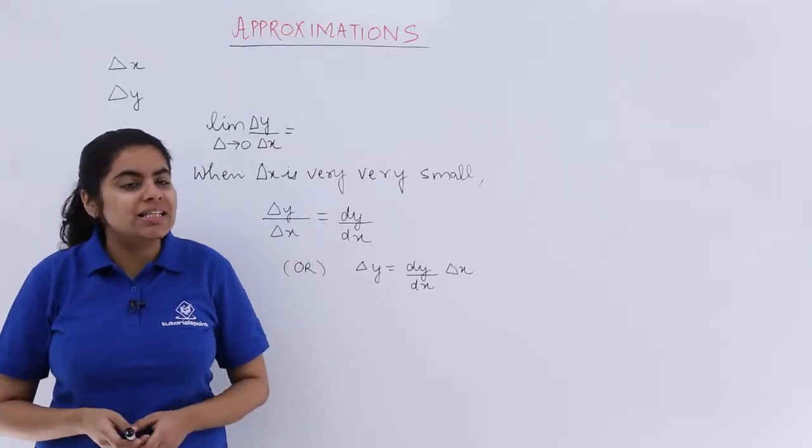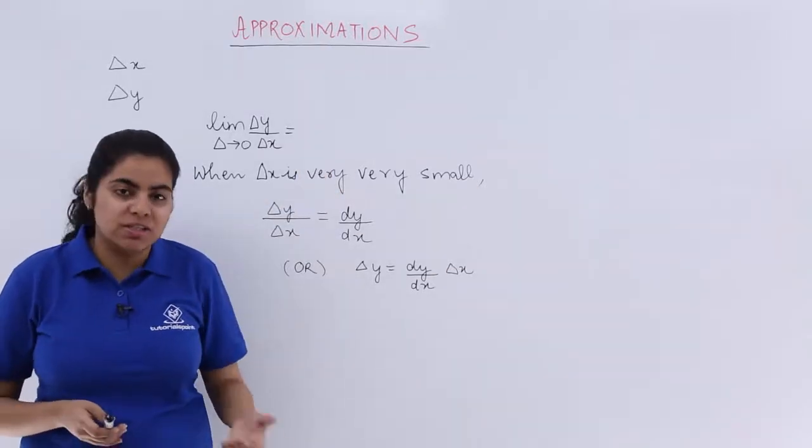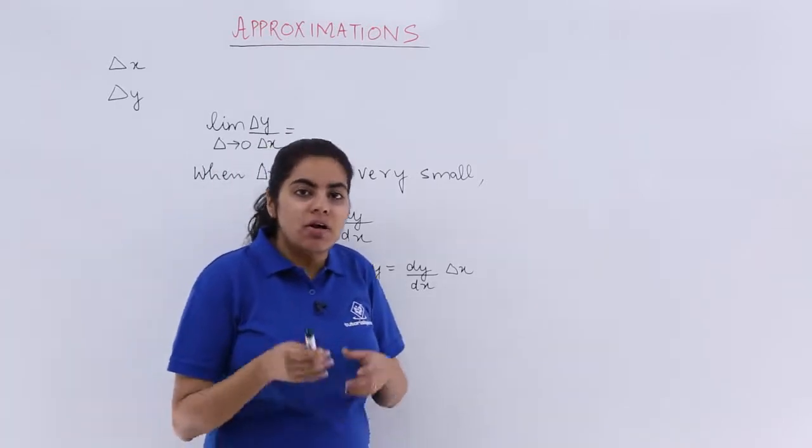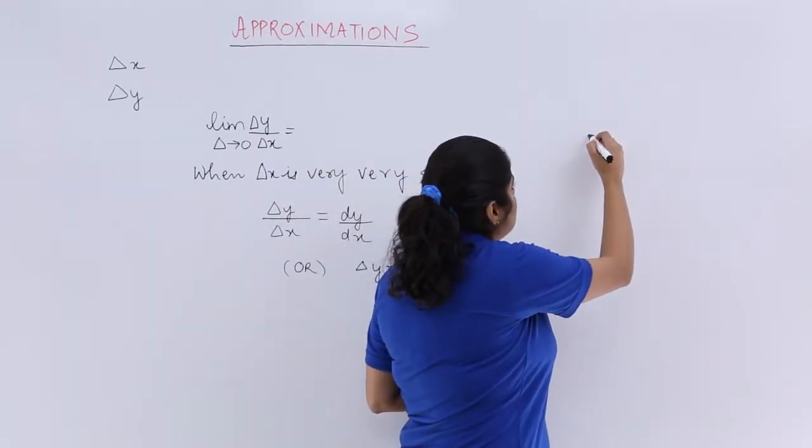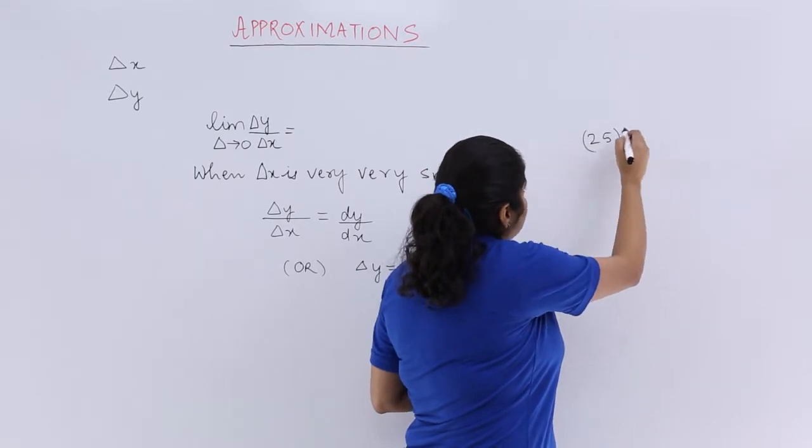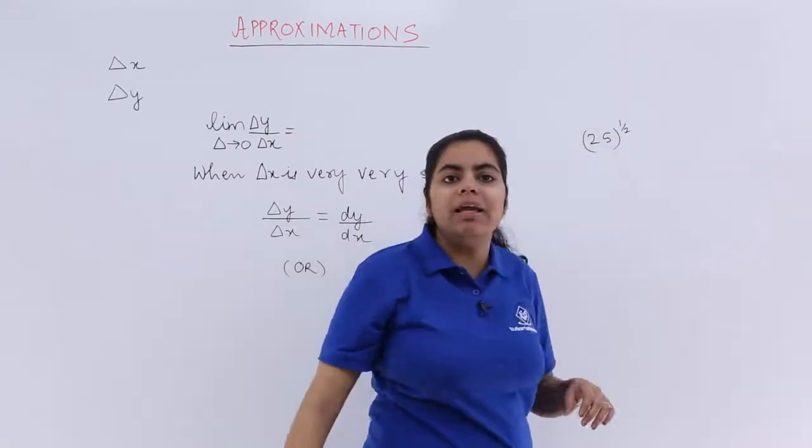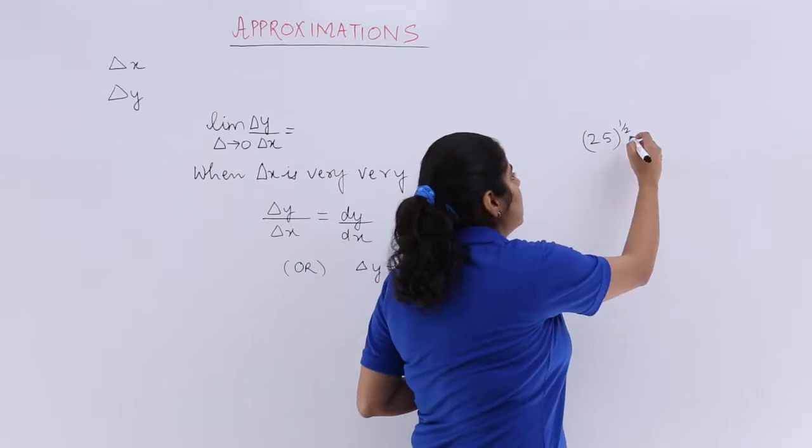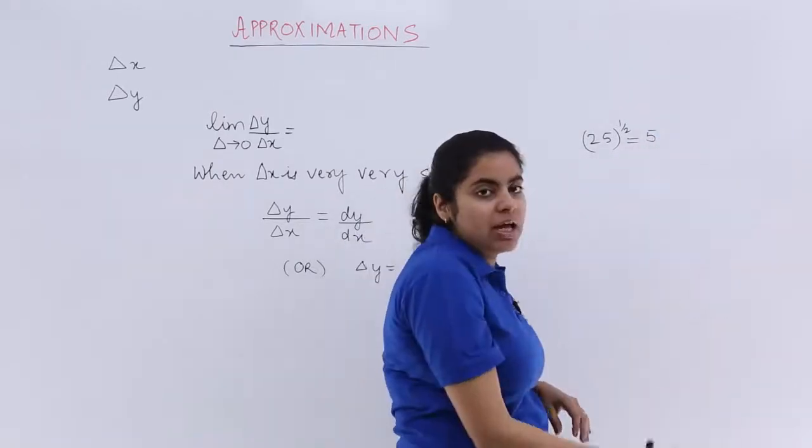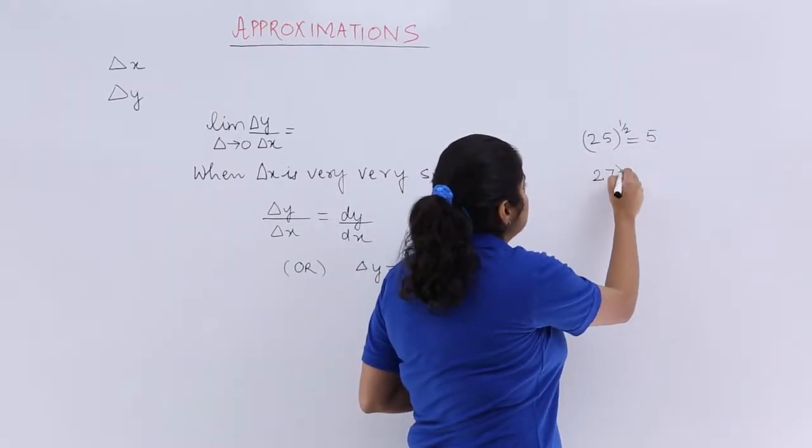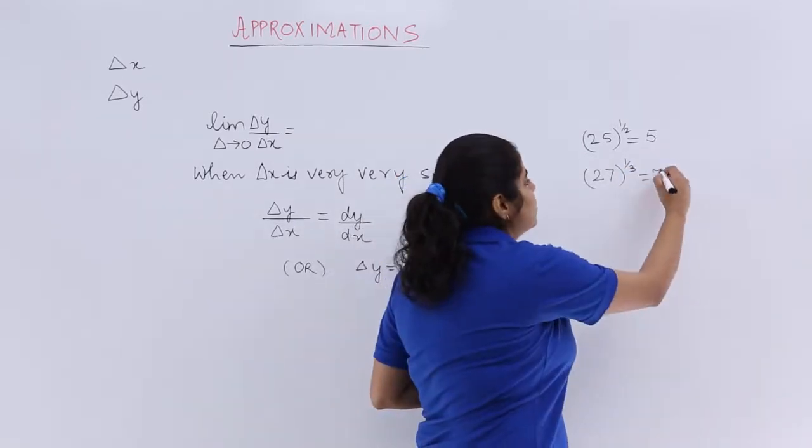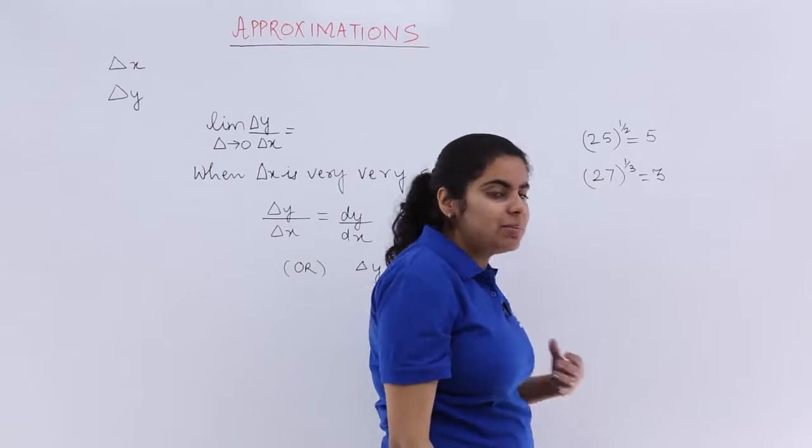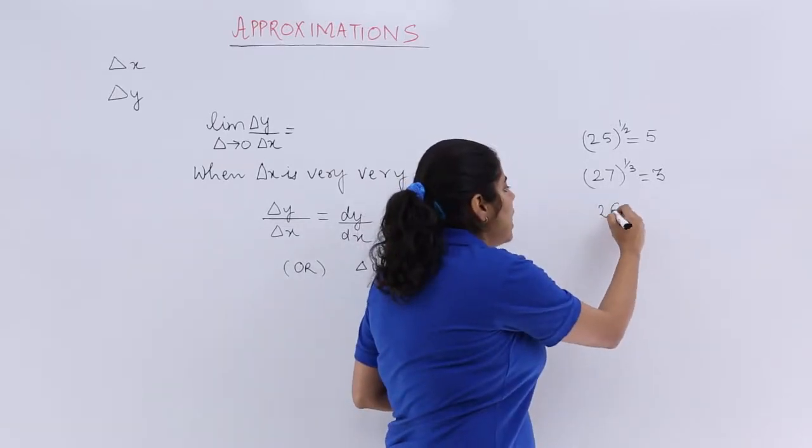In this video, let's start with approximations. Suppose we have to compute the square root of 25 - very easy, directly I would say the answer is 5. Suppose I am asked what is the cube root of 27 - again very easy, it has to be 3.